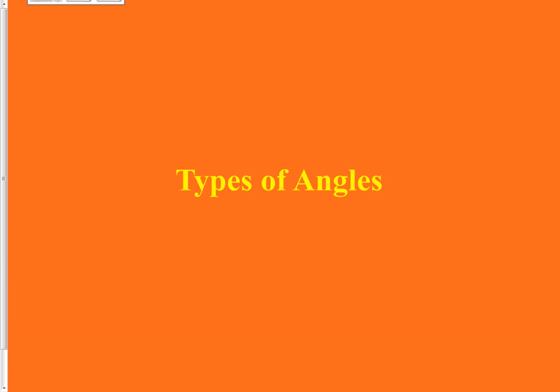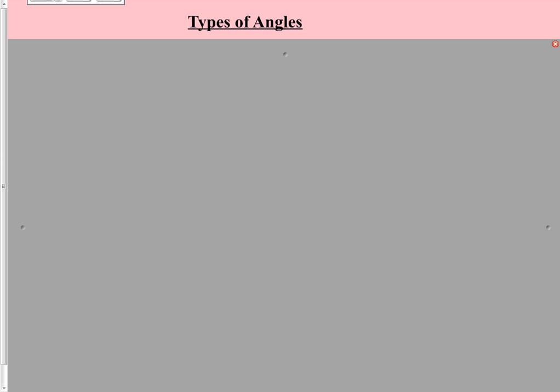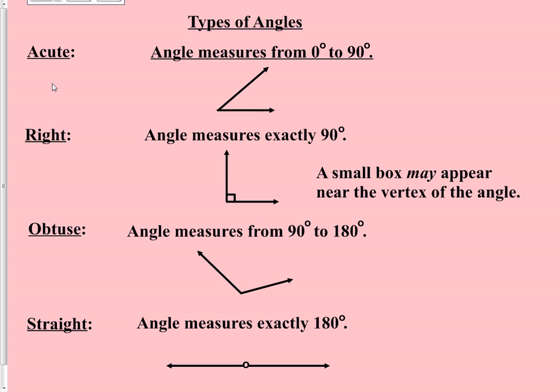Types of angles were mostly review from junior high. Acute angles measure anywhere between zero and 90 degrees, but not zero or 90. If an angle measures exactly 90 degrees, that's a right angle. An obtuse angle measures between 90 and 180 degrees, but not 90 or 180. If an angle measures exactly 180 degrees, that is a straight angle. If angles get larger than 180 degrees, we measure the shorter side of that angle instead.